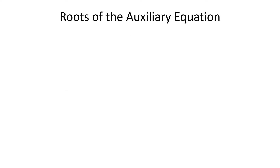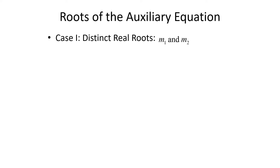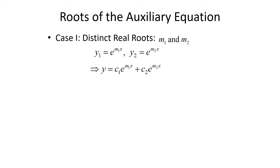To solve linear equations that have constant coefficients and are homogeneous, we want to find the roots of the auxiliary equation. There are three cases. The first case is where the roots are distinct and real — we get two different real numbers m1 and m2. That means our solutions would be y1 equals e to the m1x and y2 equals e to the m2x. These are linearly independent, so we can form the general solution as y equals c1 e to the m1x plus c2 e to the m2x. If we had additional real roots, we would just continue adding terms.